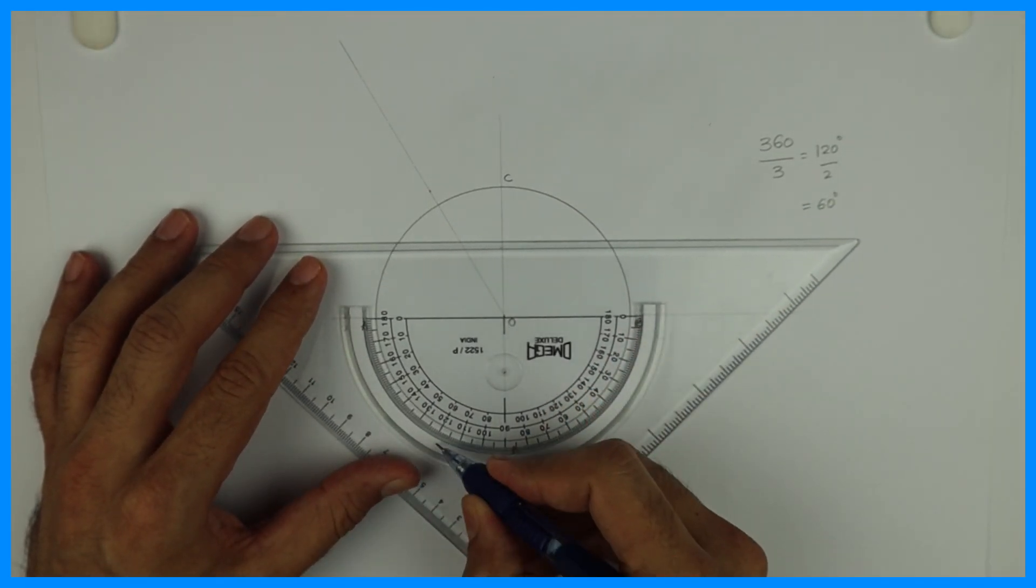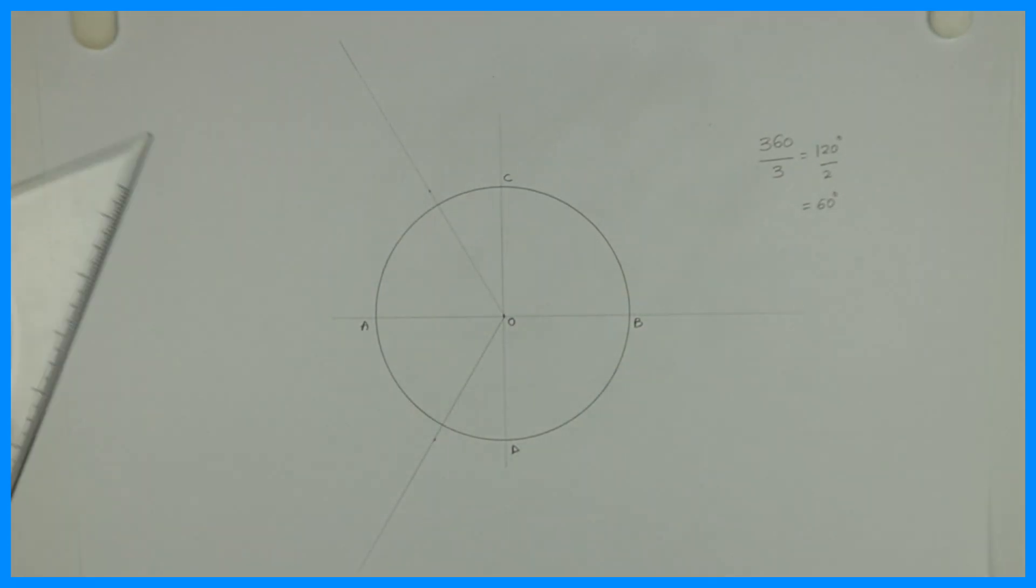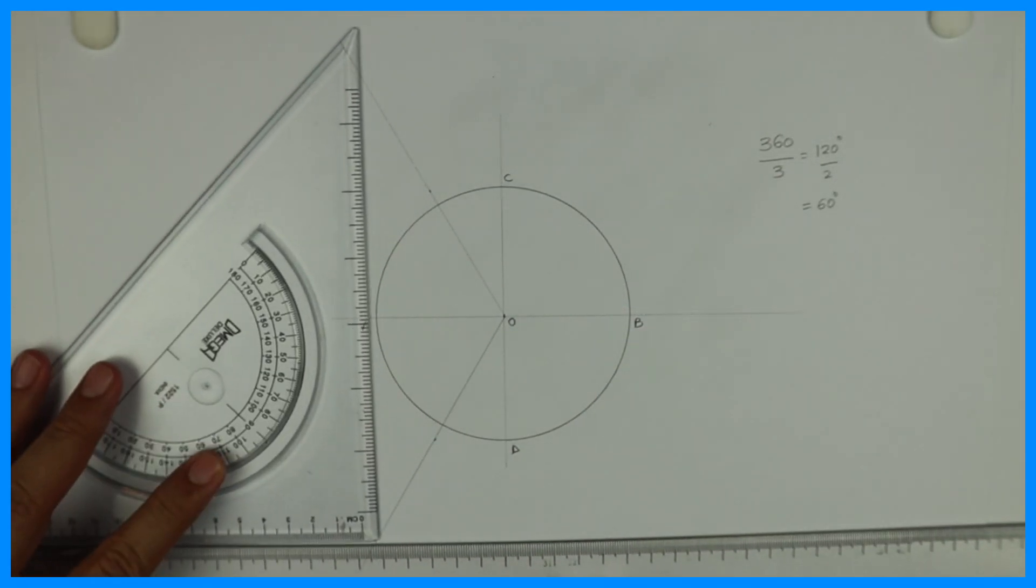Remember, if you want to draw three circles, then you do 360 divided by 3. If you want to draw four circles, then you do 360 divided by 4.